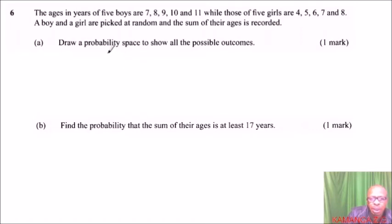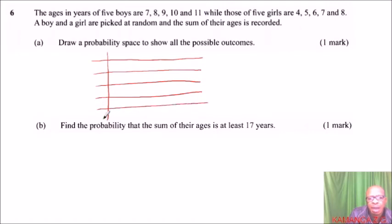Draw a probability space to show all the possible outcome. So, the probability space, we will draw a table here. So, we have 1, 2, 3, 4, 5. We need to have 1, we have 2, we have 3, we have 4, and we have 5. So, we can complete this. We also have 5 girls, so we have like that. 1, 2, 3, 4, 5. So, we can divide here and say, this represents the boys, and these are the girls.